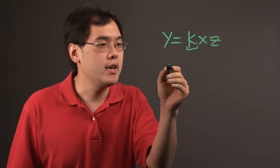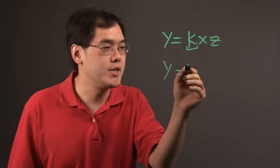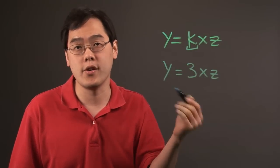For example, if you have y equals 3 times x times z, this is an example of joint variation proportion.